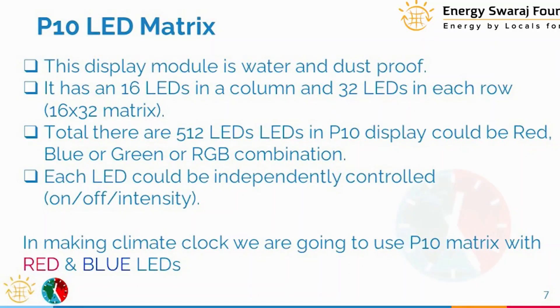To summarize: P10 means the pixel-to-pixel distance is 10mm. If you want a clearer picture, you can use P3, where the LED-to-LED distance is only 3mm. The display we are using is RGB, and P10 is one of the most commonly used LED display types available.